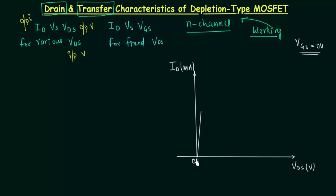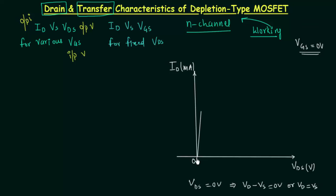Initially when VDS = 0V, ID is also 0 amp, because VD equals VS meaning no potential difference exists across the channel. As VDS increases, the potential difference increases and the drain current increases linearly. After some time, the drain current becomes constant due to pinch-off. This is how the curve looks for VGS = 0V.